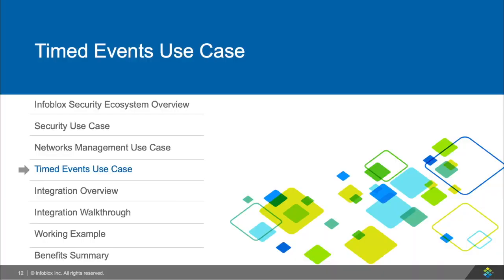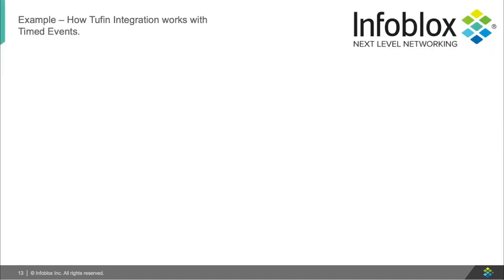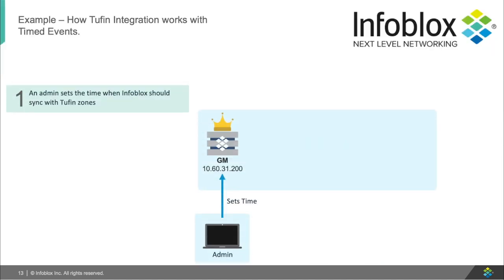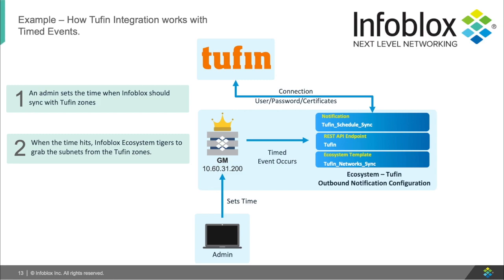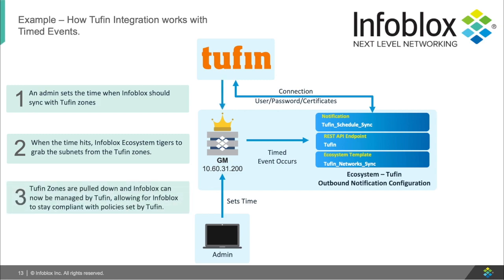Now let's look at the use case where Tuffin can update Infoblox networks with Tuffin zones. Here, an Infoblox admin has created a time for when Infoblox should sync its networks with Tuffin's subnets. When the time hits, Infoblox triggers its ecosystem template to grab the subnets from Tuffin and update Infoblox's networks, allowing admins to keep Infoblox within compliance with Tuffin zones.